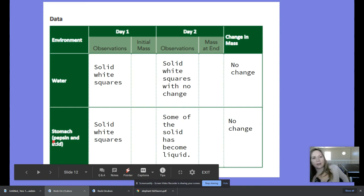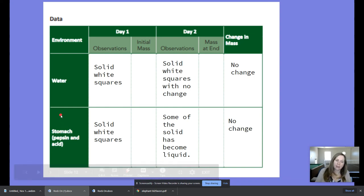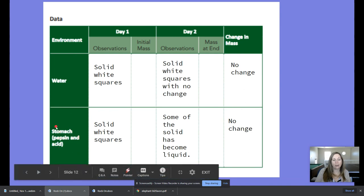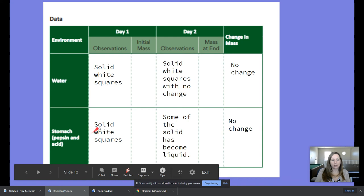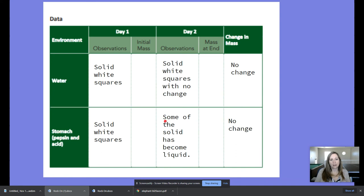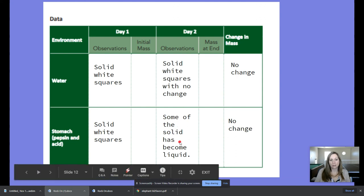Basically, she had one with pepsin, one with acid, and then one with pepsin and acid. The way our book had it set up was to do water, but it's not going to change if you have water. But with the pepsin and the acid, you saw that on the first day when she put it in there, there were solid white squares. But then by the next day, when she showed us in the video, some of the solid has actually become a liquid and there would be no change in mass. So if we were to weigh that, the mass did not change. So all of it's still there. It's just getting broken down.